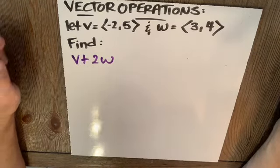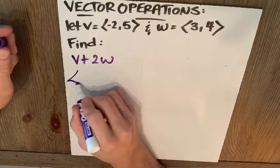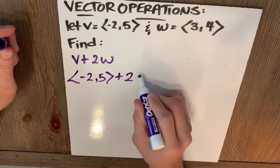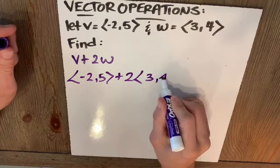Find V plus 2W. That's easy. This is negative 2, 5, plus 2 times 3, 4.